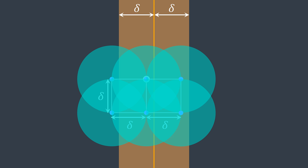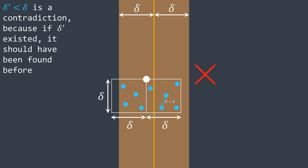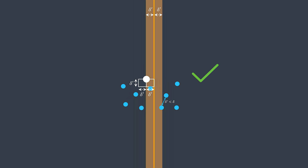Adding a single point beyond six would create a contradiction. If you're still not convinced, consider: if there were more than six points in the Delta by 2·Delta rectangle, at least two on the same side would form a distance smaller than Delta — which would have been found in the first part of the algorithm, reducing Delta and bringing us back to at most six points.